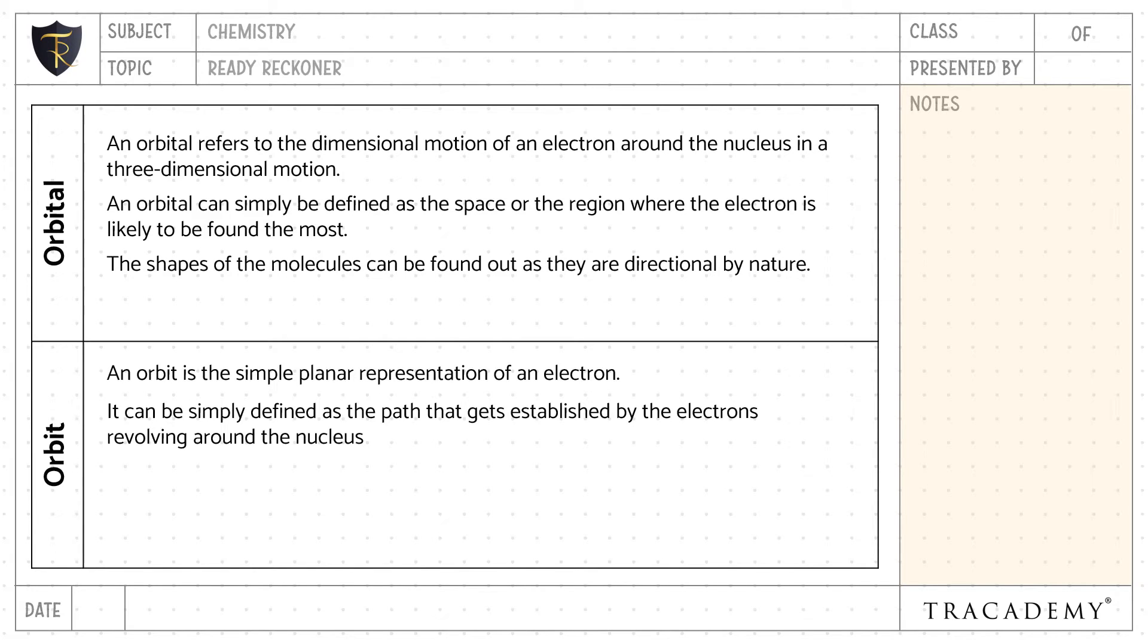The shape of the molecules can be found out as they are directional by nature using the orbital. Whereas, the shape of the molecule cannot be explained by an orbit as they are non-directional by nature.